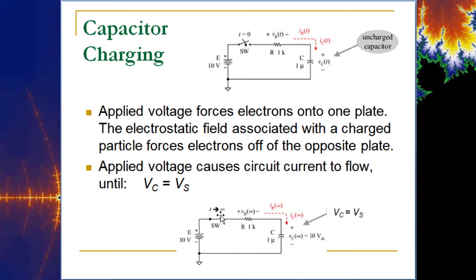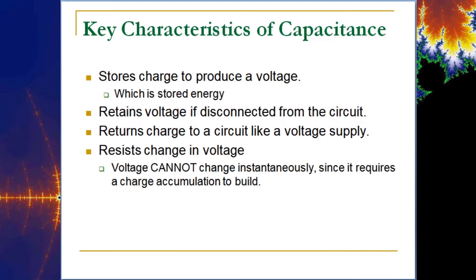At t equals infinity, the voltage on the capacitor equals the source voltage, so there is no current because there are zero volts across the resistor. Capacitors are used to store charge and produce a voltage. You'll often see them on the output of a 5-volt TTL signal, and they're frequently used in conjunction with a Zener diode because the Zener produces a stable voltage output.